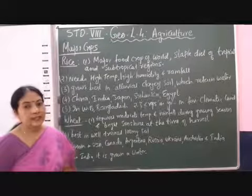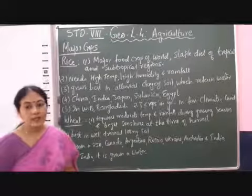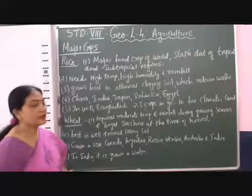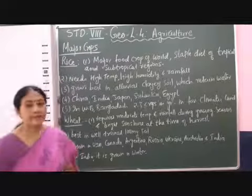In India, wheat is grown in the winter season, and it is a Rabi crop in India.